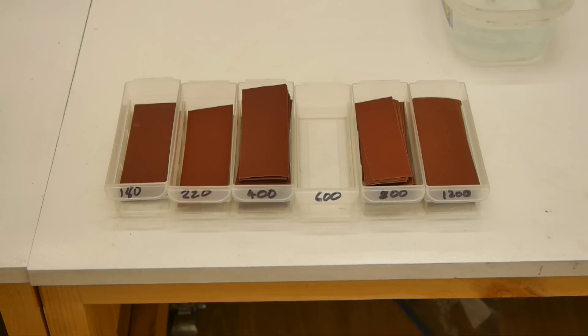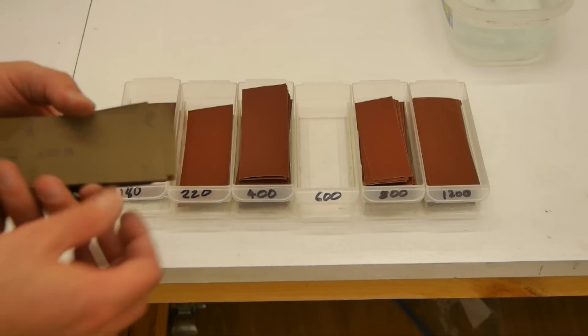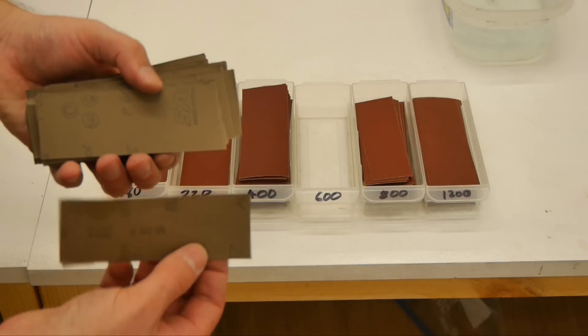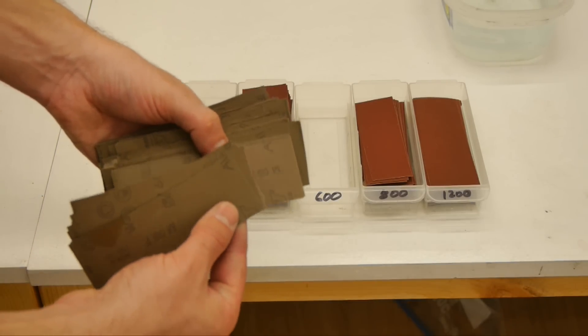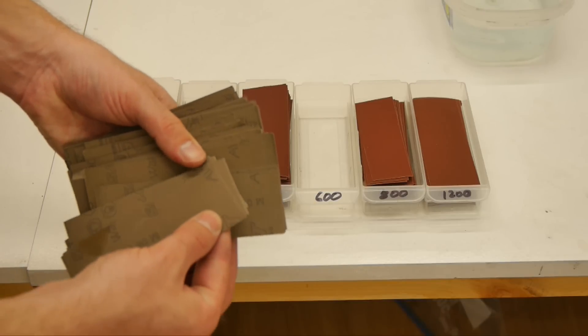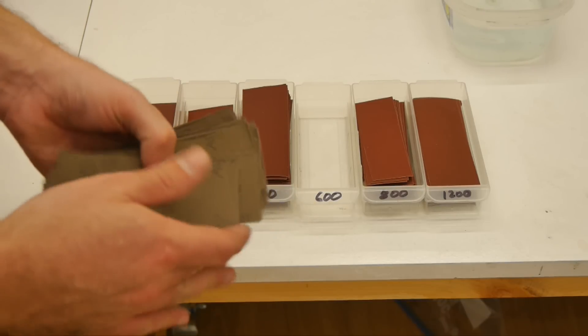Now I recommend after you've cut up the sandpaper that you keep it somewhere where it has labels because if you have a look at the backs of the sandpaper after you've cut it up most of them don't actually have the grit on there. So if you mix them up it'll be impossible to sort them out.